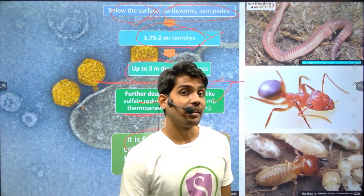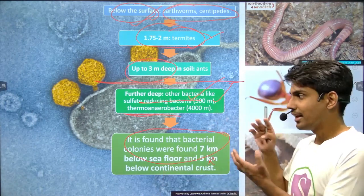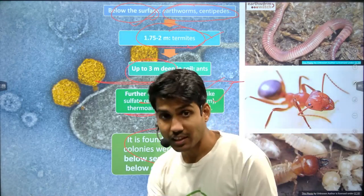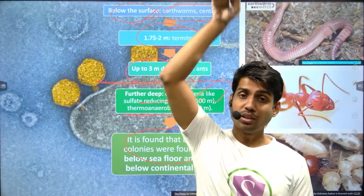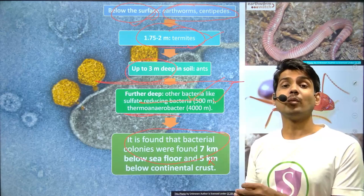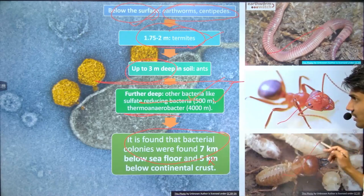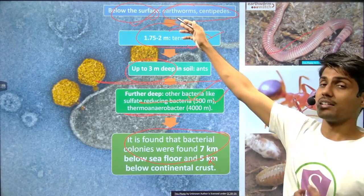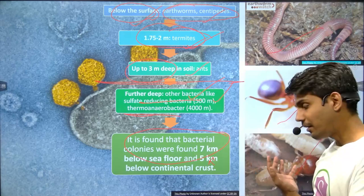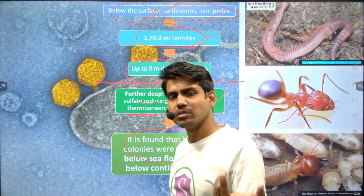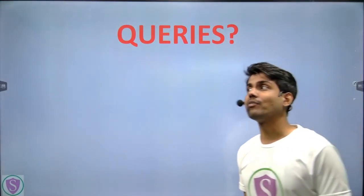There are reports that life forms are present almost 7 kilometers below the oceanic crust and 5 kilometers below the continental crust. So above the surface life goes up to 40 to 50 kilometers, but below the surface life goes down to almost 7 kilometers. This is how the biotic life is distributed across the different divisions of the biosphere.